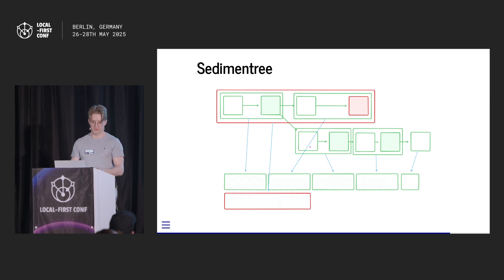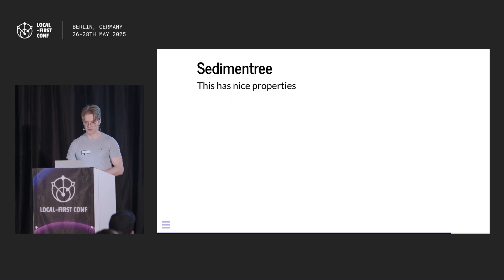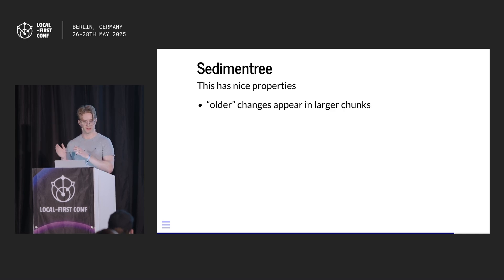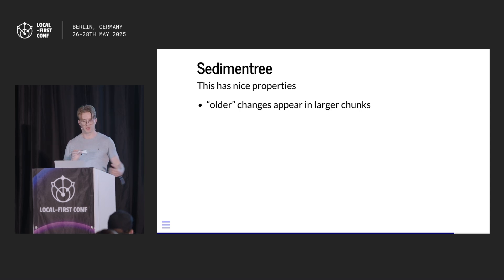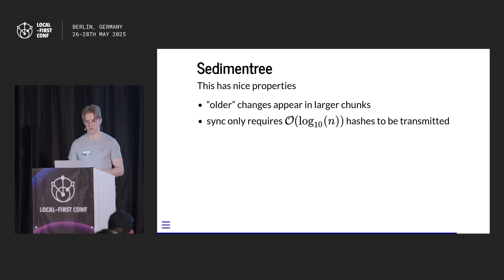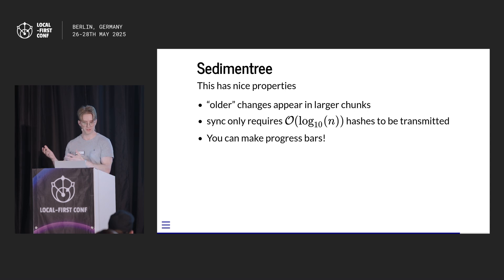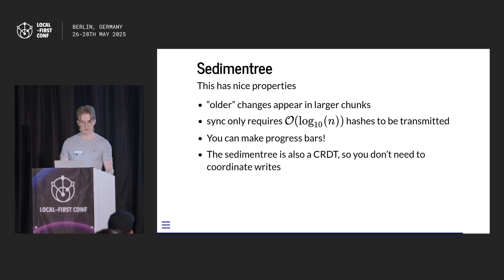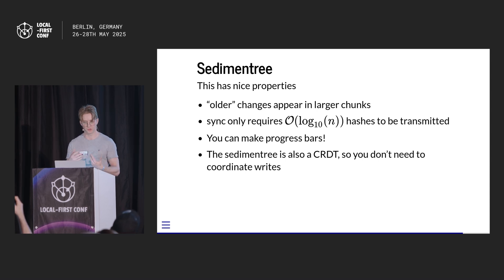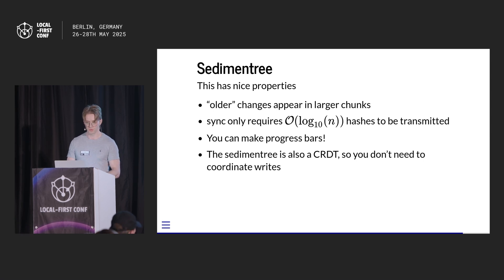The sediment tree is nice because to communicate this tree structure, we only need to send the beginning and end hashes of each chunk. We have exponentially fewer chunks the further back in time, so for a million-change document, we send just tens of hashes to explain which chunks need downloading. We can also put the size of each chunk so we can make a progress bar per document. And the tree itself is also a CRDT, so you don't need to coordinate writes to storage — whoever's synchronizing can load from storage whenever they like, taking advantage of the eventually consistent properties without losing the benefit of compression.